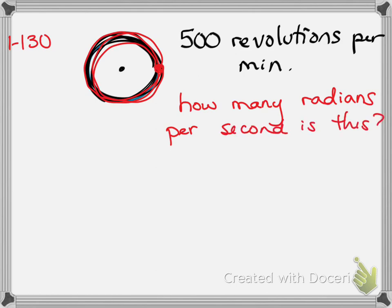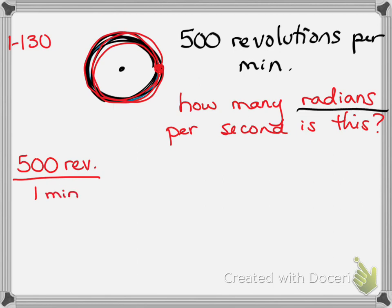You might equate this to one of those questions in science where you're going so many miles per hour and they want to know how many feet per second it is. So we're just doing some unit conversions. We're going to start out with 500 revolutions per one minute and we want to change it to radians per one second.